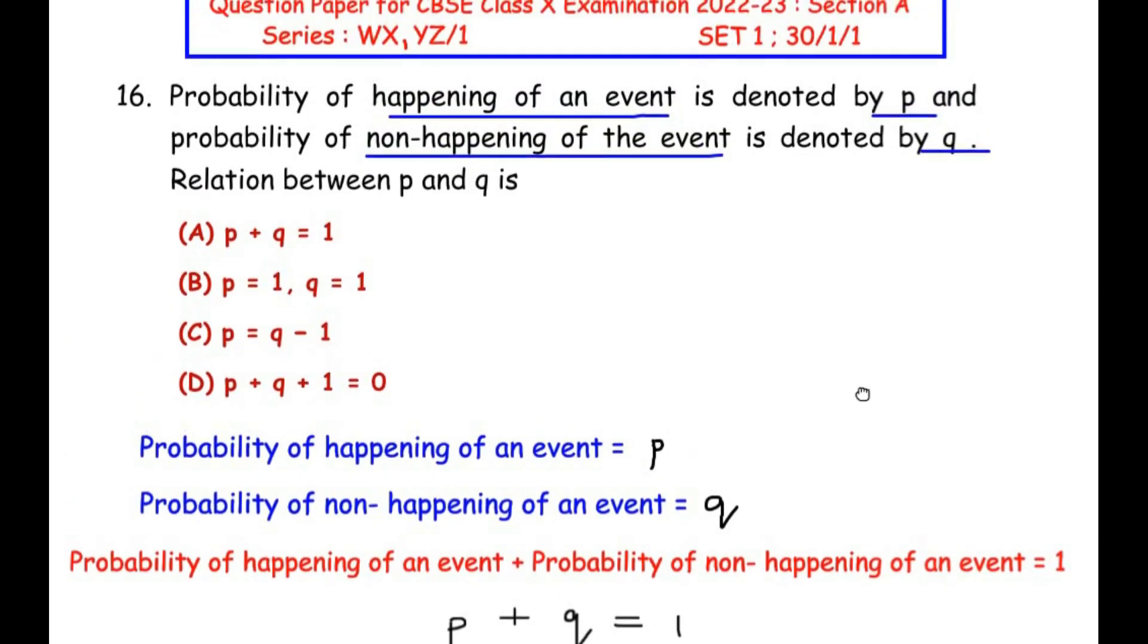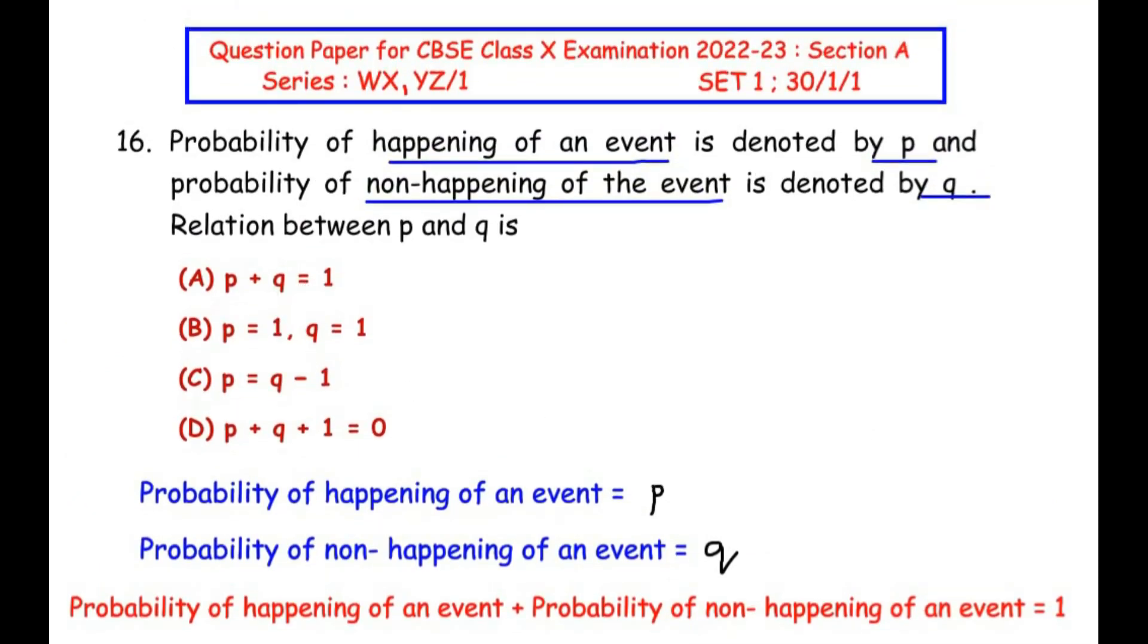So let us see if it is in the options. This is our option A, which is p + q = 1. I hope you have understood all the steps and liked the video.